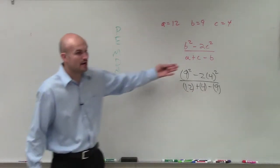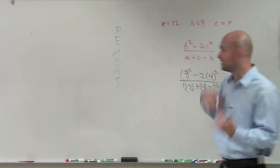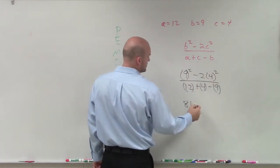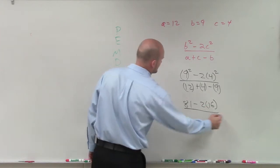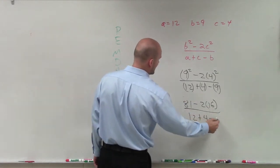Now we just need to apply our order of operations. And again, when we have a rational expression, we want to simplify the numerator and the denominator. So simplify this. I'll have 81 minus 2 times 4 squared, which is 16. And then here, there's nothing else I can do. 12 plus 4 minus 9.